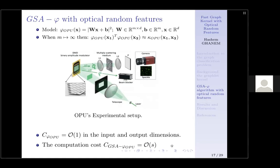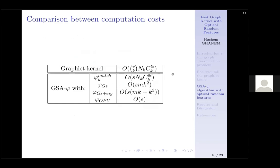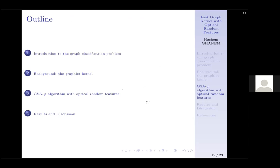Here is a comparison of the main complexities. We started from the graphlet kernel, which was extremely high. Using our framework with the Gaussian kernel it was O(S · M · k²). Using the OPU's light-speed random projections, we decreased this complexity to O(S) — just the number of samples.